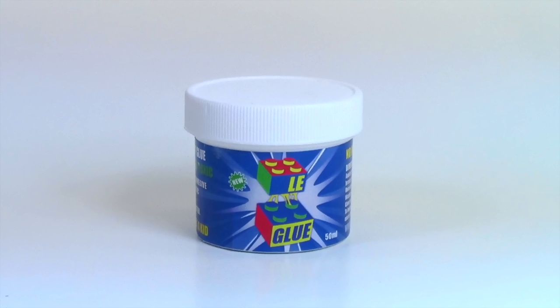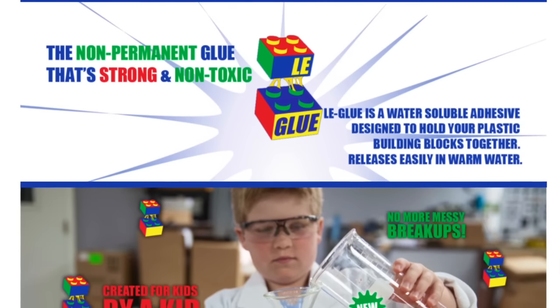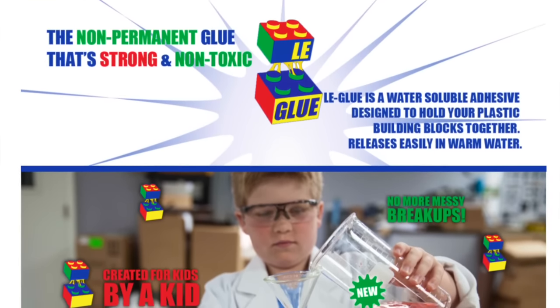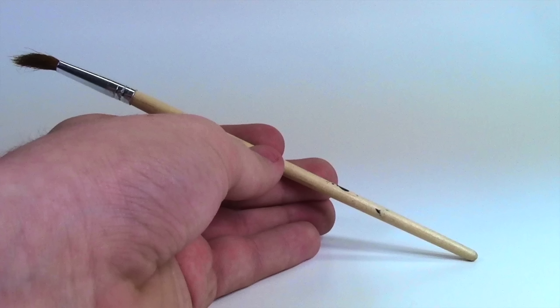To glue your Lego pieces you need the Leg Glue. If you're interested in learning more, you can visit their website at legglue.com. The next thing I definitely recommend you have is a paintbrush. It says you can dip the Lego bricks right in the bottle, but I think you'll end up using a lot more glue that way. I'm going to use a paintbrush.